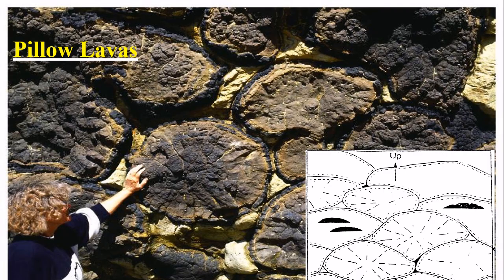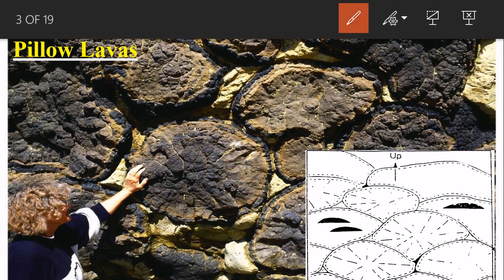The first primary structure is pillow lava. Pillow lava is basaltic lava formed underwater. When lava comes out underwater, it solidifies quickly — the surface cools, forming a glassy skin — and then it forms pillow-like bulbous structures.